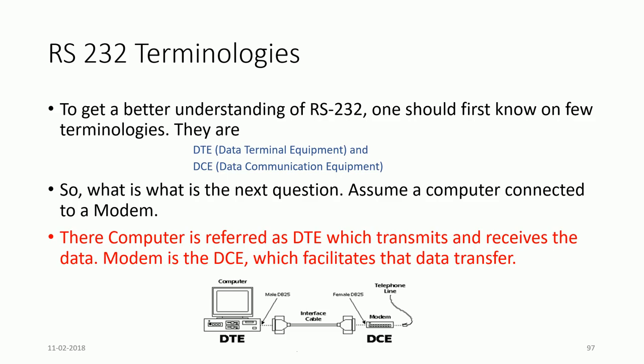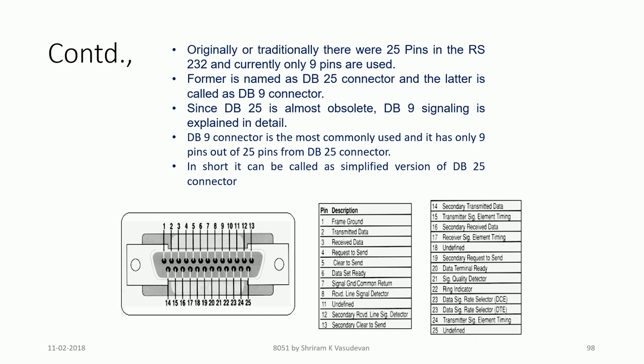Before we get into RS-232 further, we need to understand two things: DTE and DCE. DTE is data terminal equipment; DCE is data communication equipment. When connecting DTE with DCE, we need an interface cable. DCE is nothing but a modem, and DTE is the computer or PC used for data transfer and receiving. The modem facilitates the data transfer.